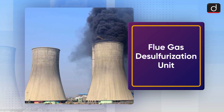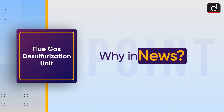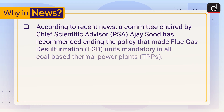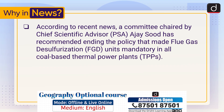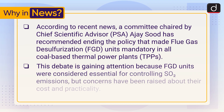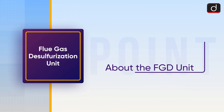Hello everyone, welcome to another episode of 'To The Point.' Today's topic of discussion is Flue Gas Desulfurization units. A committee chaired by Chief Scientific Advisor PSA Ajay Sood has recommended ending the policy that made FGD units mandatory in all coal-based thermal power plants. This debate is gaining attention because FGD units were considered essential for controlling SO2 emissions, but concerns have been raised about their cost and practicality.